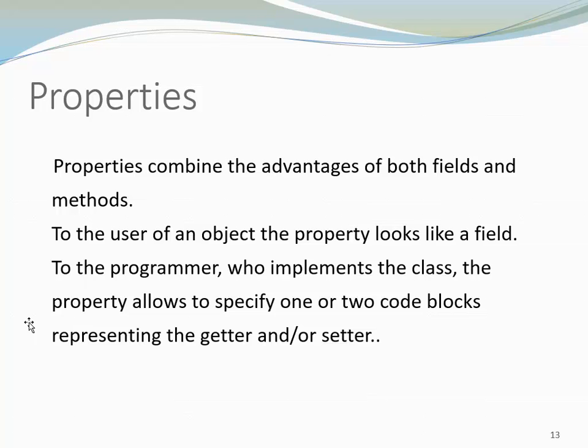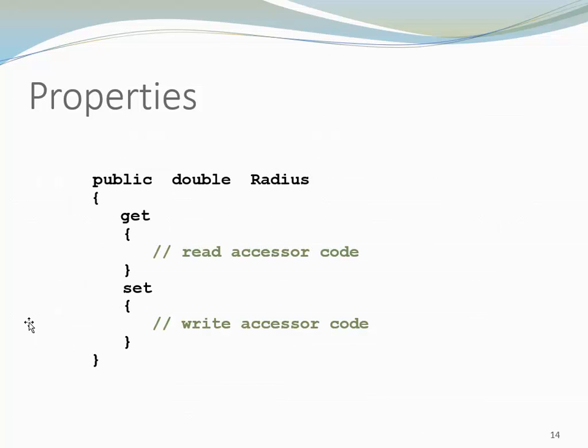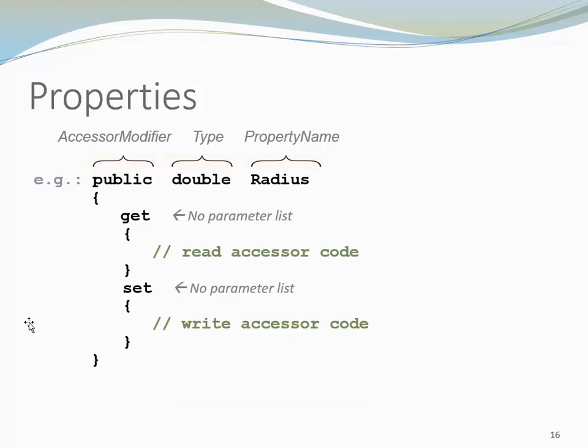It allows to specify one or two code blocks representing getter and/or setter. So here I have a property and you can see we have an access modifier, type, property name. And inside my property declaration, I have get and set, no parameter list.